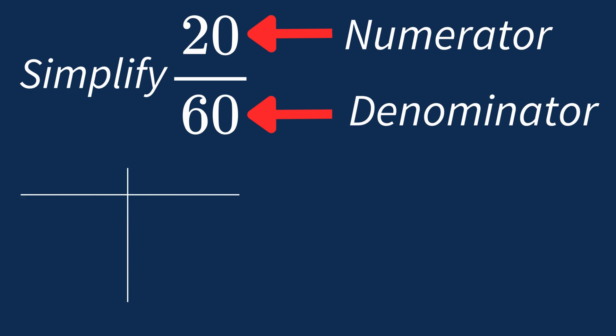First, let's list out the factors for each. For 20, the factors are 1, 2, 4, 5, 10, and 20.